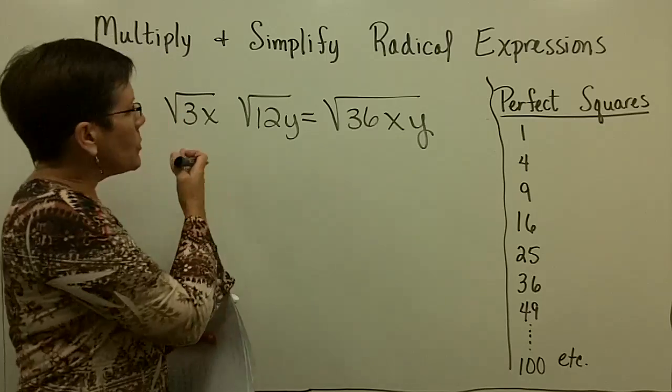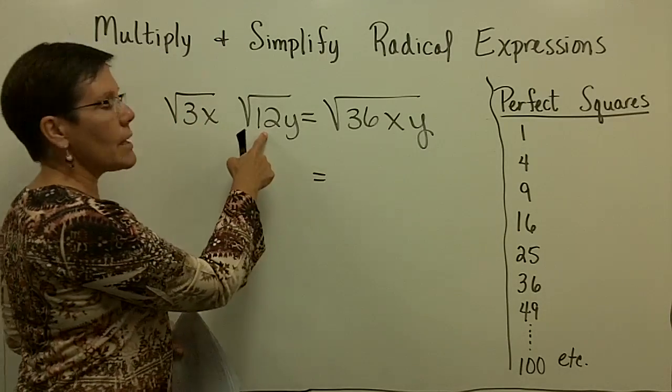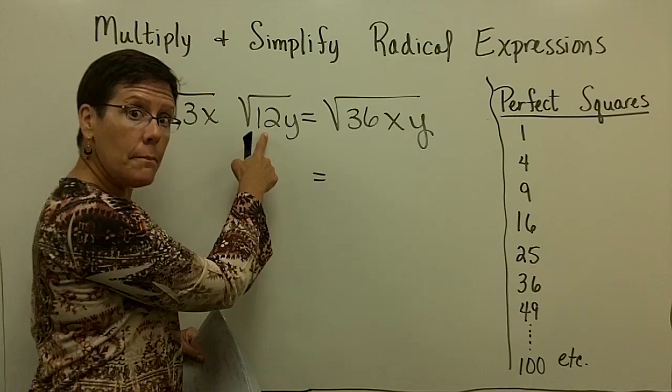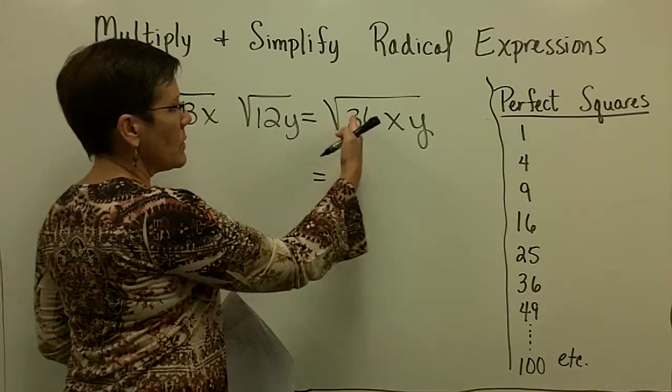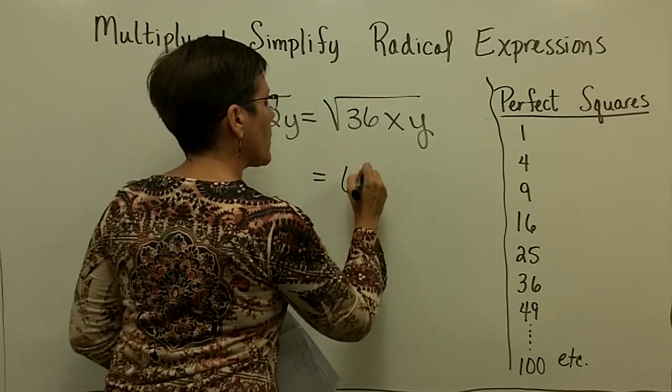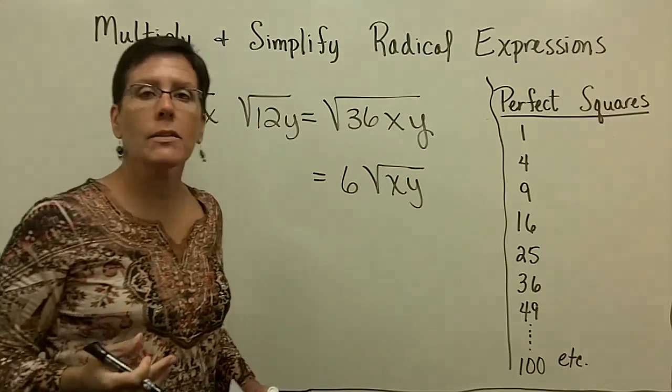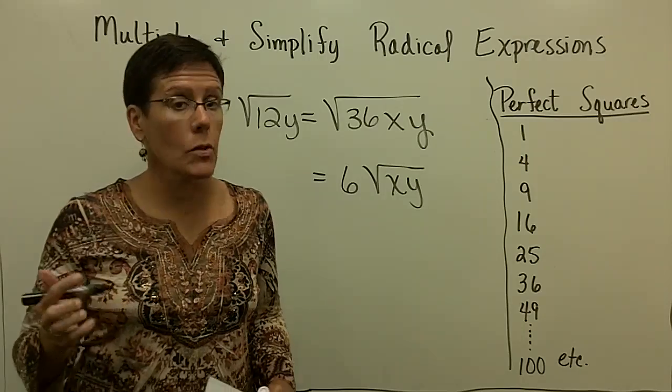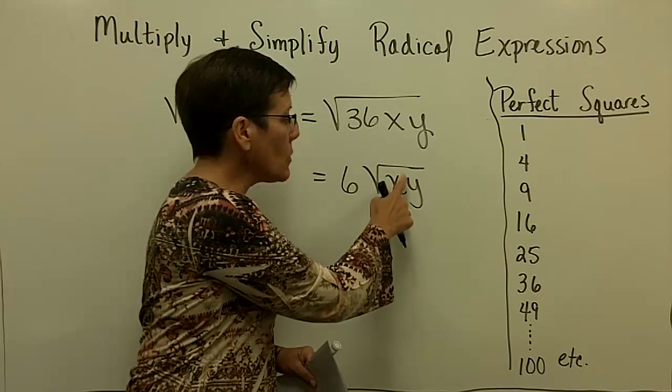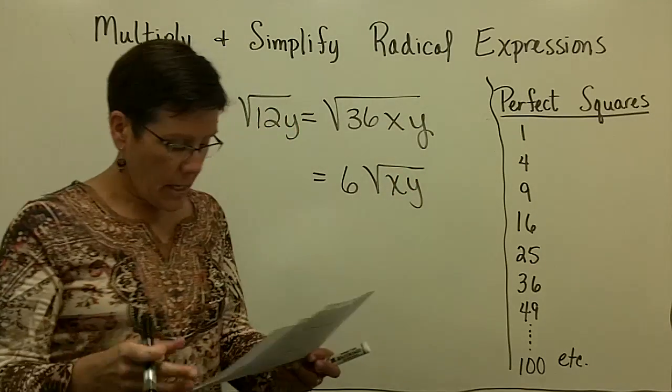So if you see that coming about, don't bother with breaking that into 2 times 2 times 3. Just bring those across and then say, the square root of 36 is 6. The x and the y, I cannot take the square root of them. They are not raised to an even exponent, nor is their exponent anything greater than a 2. They're just a 1 here and a 1 here, and I'm all done.